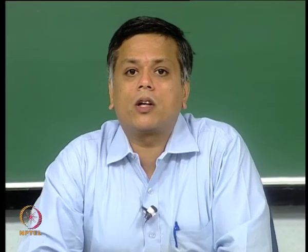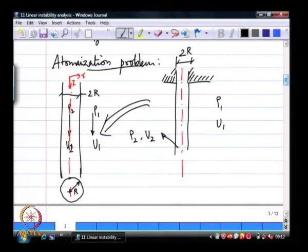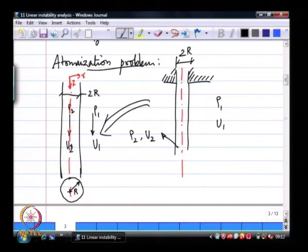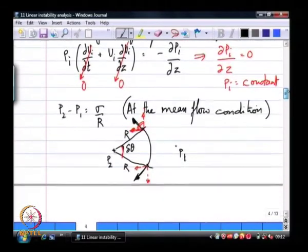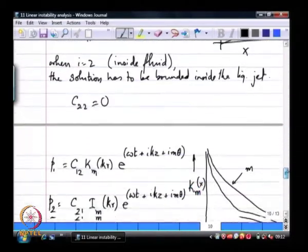Good morning. We are going to start off from where we left at the last class. We were looking at applying linear instability analysis to a cylindrical jet, where the jet itself is moving with a velocity u2 and the fluid outside could be moving with a velocity u1, and we wanted to see how the stability analysis extends to this case.